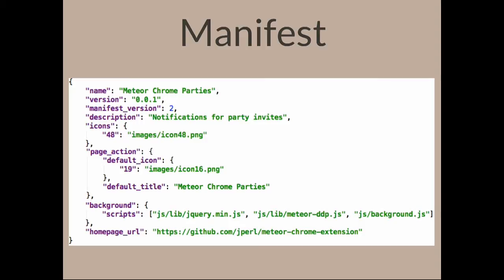The manifest has icons — the 48-pixel icon shows up on the Chrome extensions management page. You can also determine if you want a page action or a browser action. Since we want to see parties all the time, we'll use a browser action, which shows up next to the tools dropdown. Then we've got some background scripts: jQuery, the Meteor DDP library, and a background script — these run in the background. You can also have content scripts, which are injected into whatever page you choose.